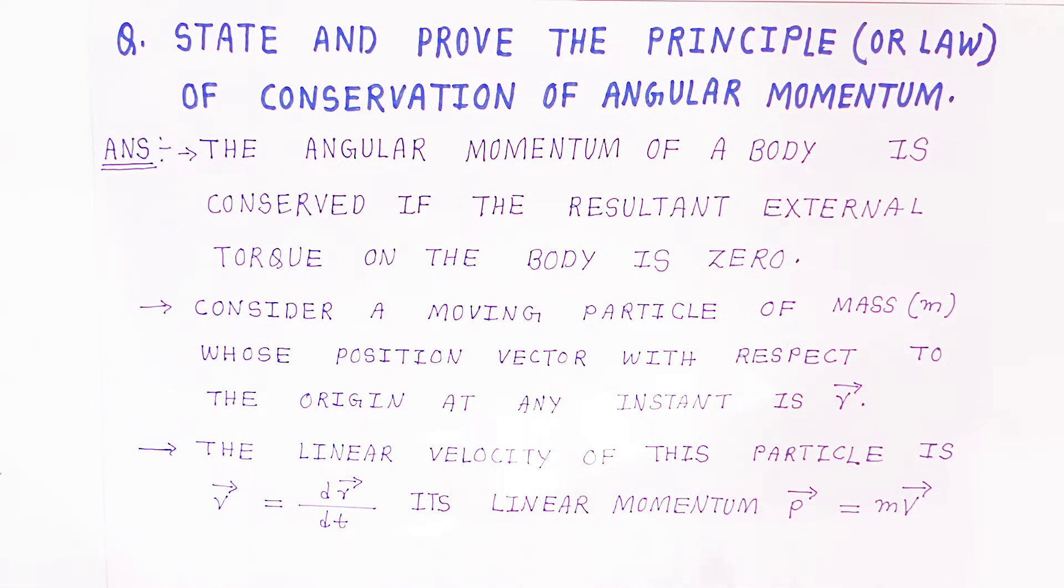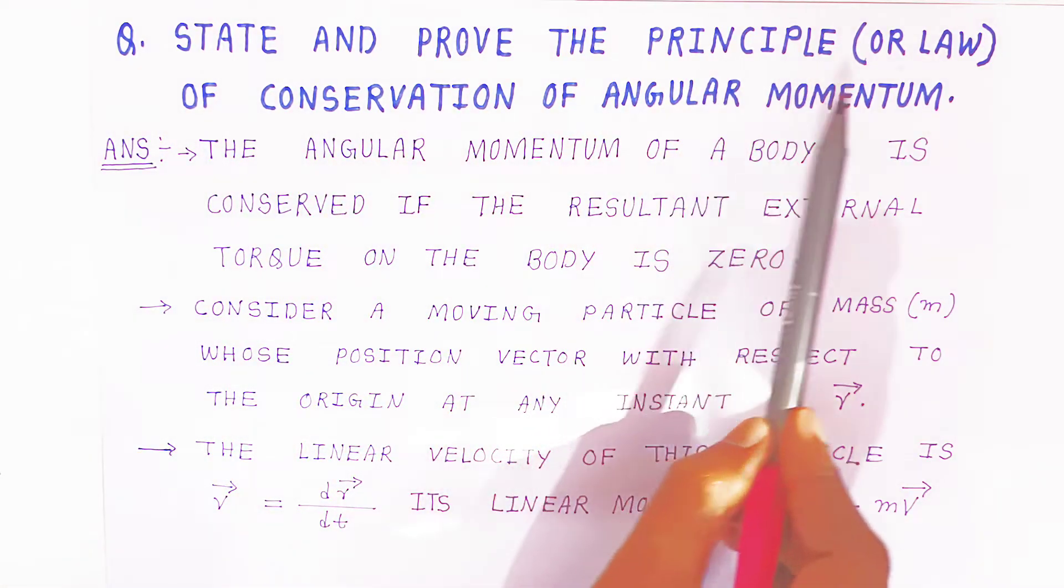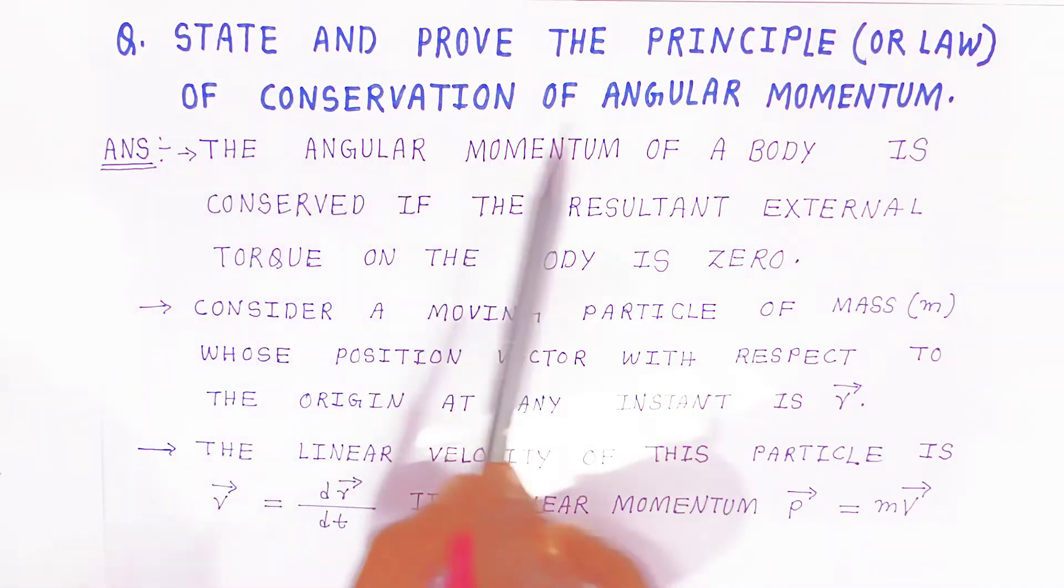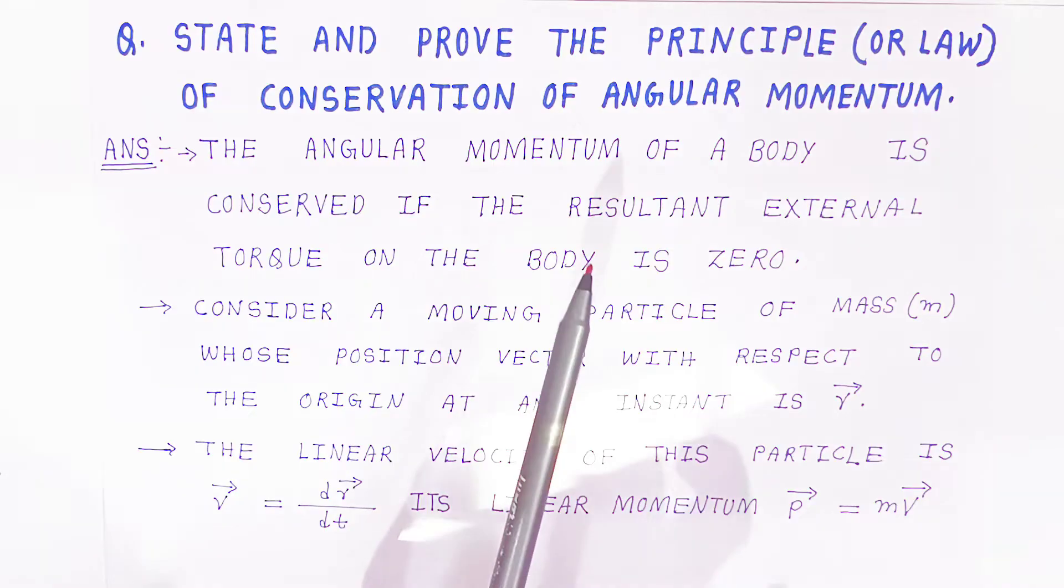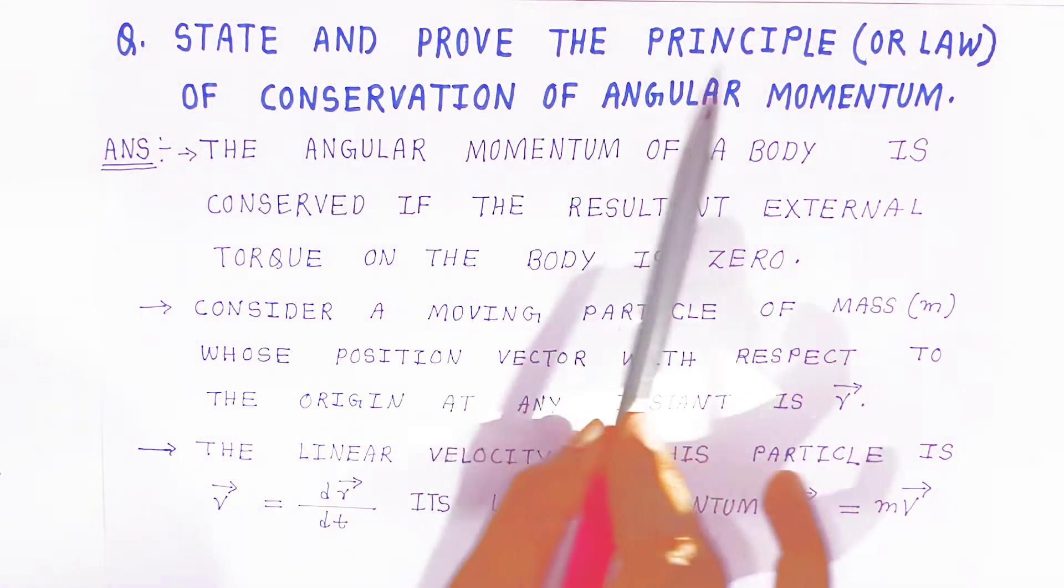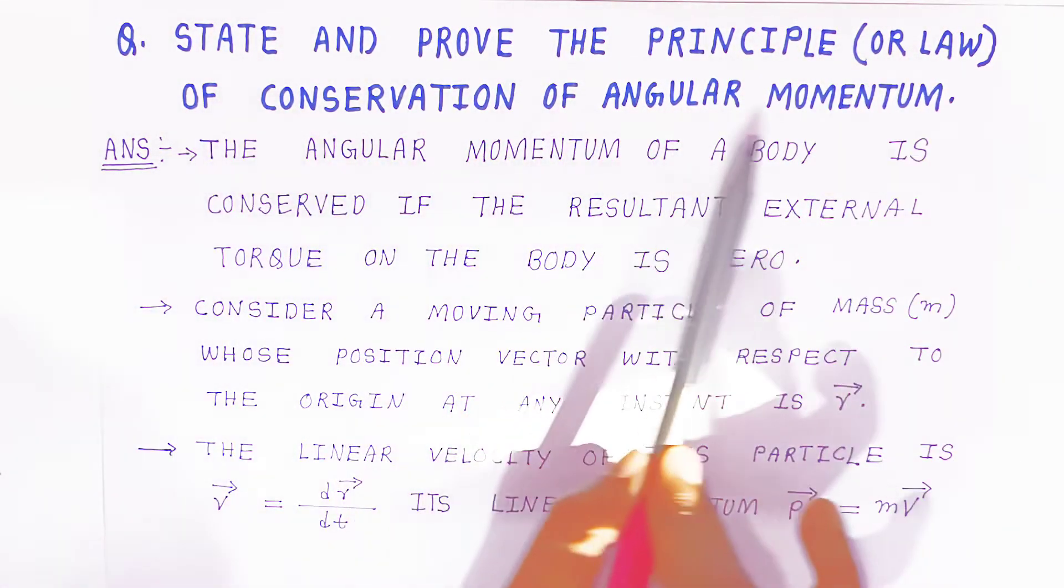In rotational dynamics, we are going to state and prove the principle or law of conservation of angular momentum. This is the last part of the chapter - the state and prove the principle or law of conservation of angular momentum.